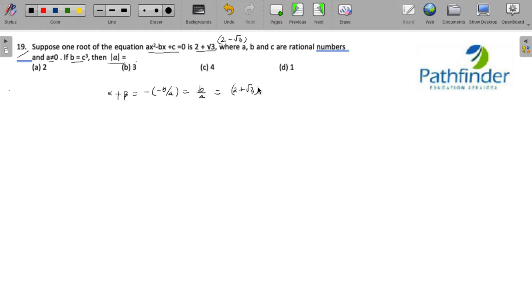So, what is the sum of roots? 2 plus root 3 into 2 minus root 3. So, b by a is equal to 4.